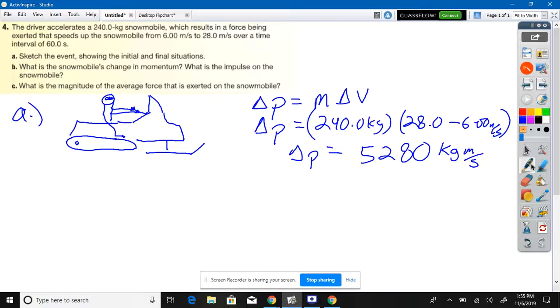Be careful of the units here: kilogram meters per second. These are not newtons, do not write newtons. Remember what was a newton? A kilogram meters per second squared. This is kilogram meters per second. See the difference?